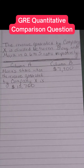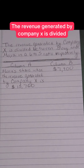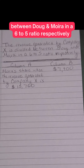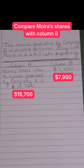Here's a classic quantitative comparison question. We're told that the revenue generated by company X is divided between Doug and Moira in a six to five ratio, respectively. We need to compare Moira's share of $15,700 with column B, $7,900.